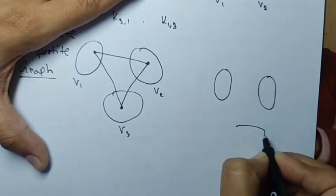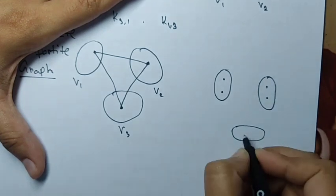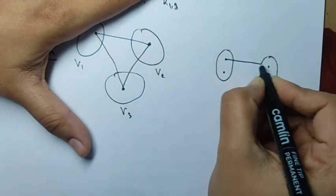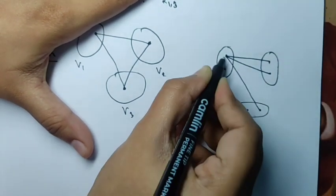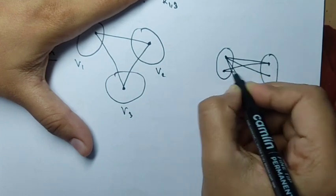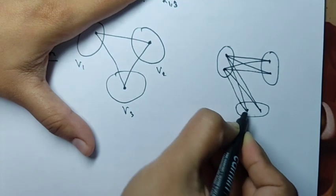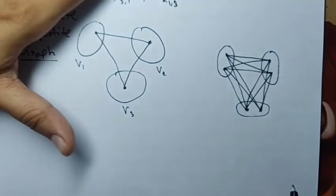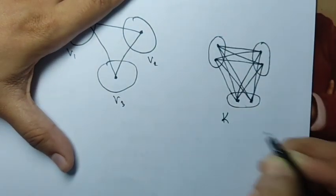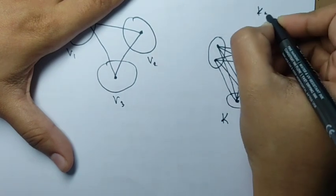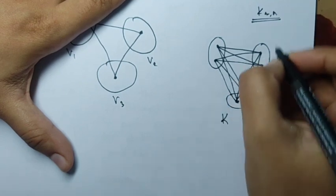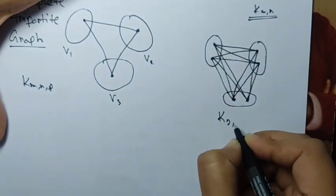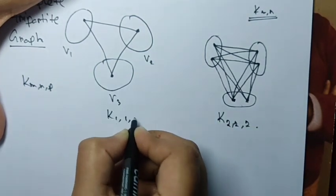Consider a complete tripartite graph where each of the three parts has two vertices. Each vertex is adjacent to all four vertices of the other two parts, and no two vertices within the same part are adjacent. This gives the complete tripartite graph denoted K_{2,2,2}. The minimal case — one vertex in each part — is denoted K_{1,1,1}. The notation for a complete tripartite graph is K_{m,n,p}.